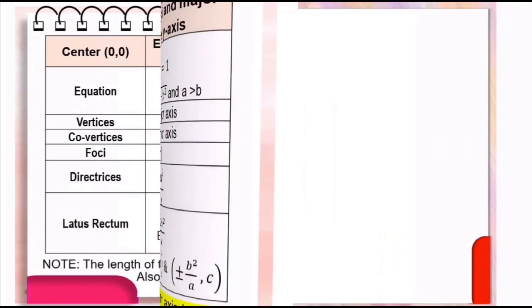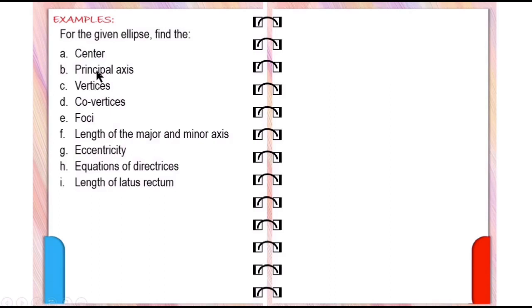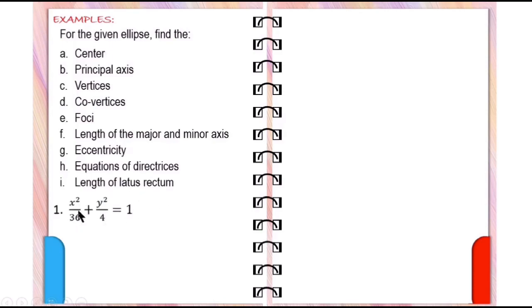Let us now have an example. For the given ellipse, find the center, principal axis, vertices, co-vertices, foci, length of the major and minor axis, eccentricity, equations of the directrices, and the length of the latus rectum. Number 1: the equation is x squared over 36 plus y squared over 4 equals 1.